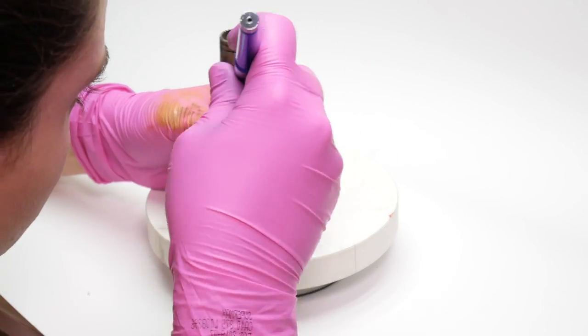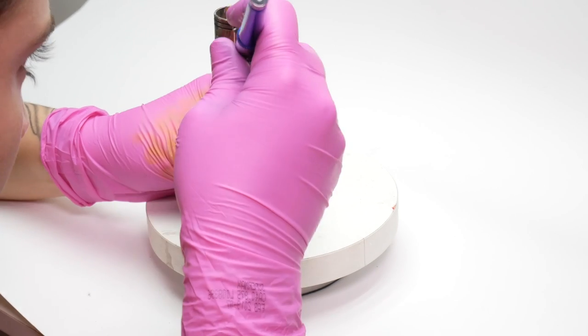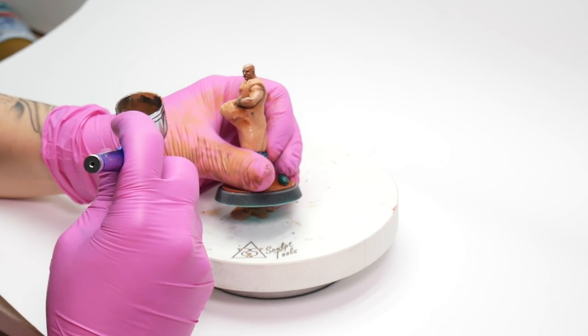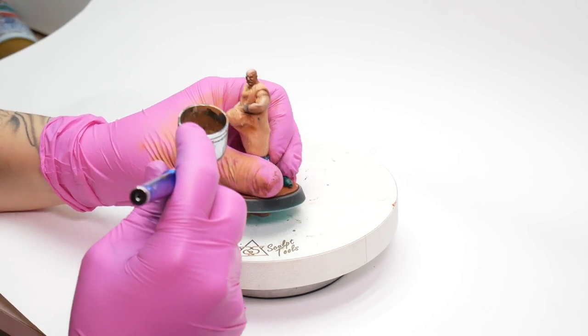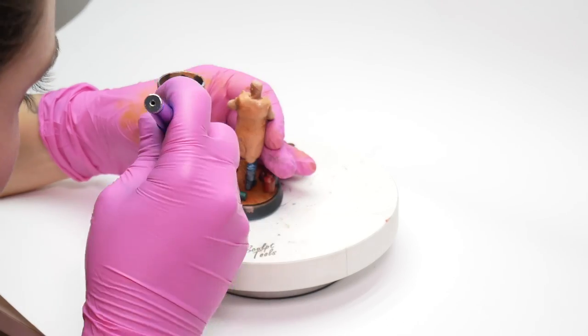I used Flow Improver and Isopropyl Alcohol to dilute the paint for the airbrush. I started with the dark tones for the skin, very carefully coming laterally through the piece.